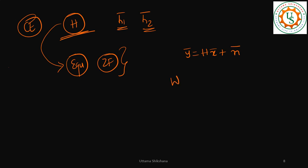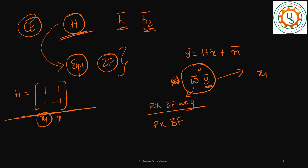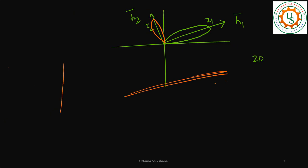Now, I'm going to multiply by a receive beamforming weight vector w̄ᴿˣ applied to ȳ. I want to recover just x₁. Let's take an example channel matrix H = [[1,1],[1,-1]]. So x₁ is transmitted along column [1,1]ᵀ and x₂ along [1,-1]ᵀ. The receive beamforming weight should let us see the signal in the right direction to extract x₁ without interference from x₂.